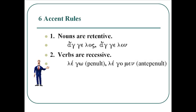The second rule is that verbs are recessive — the acute will always try to move back toward the antepenult as far as it can go in the case of verbs. So it's lego, but then becomes legomen, where the antepenult is accented. The accent moved from the penult back to the antepenult because verbs are recessive.